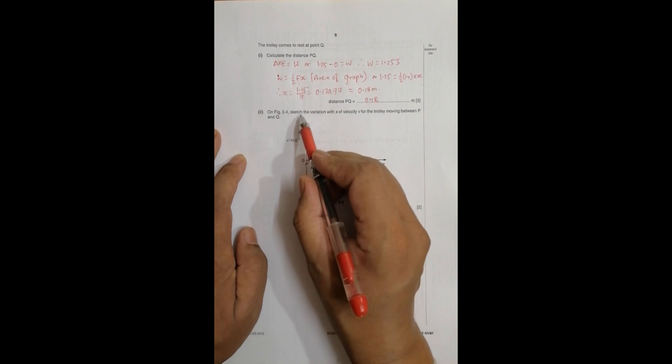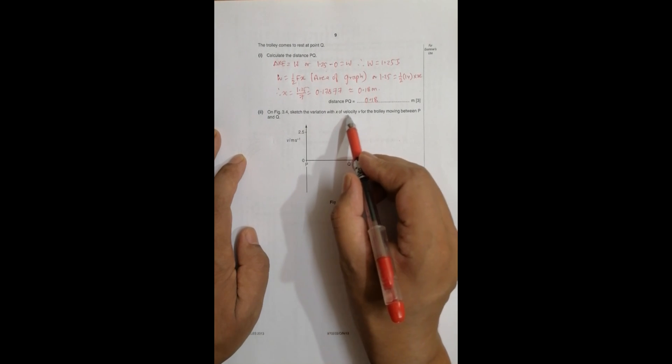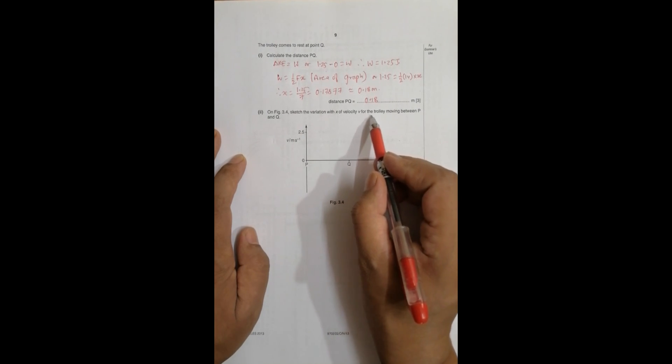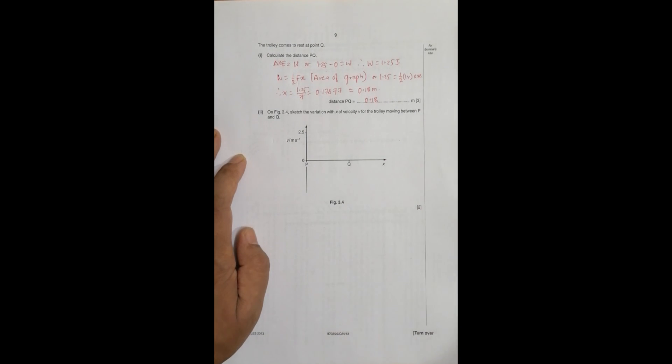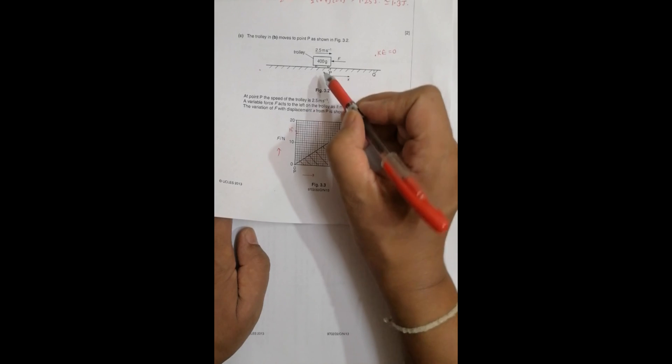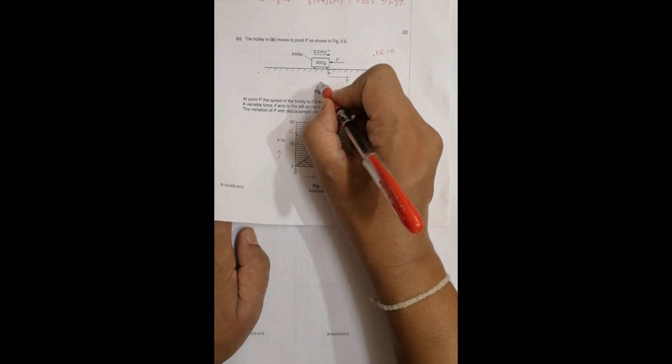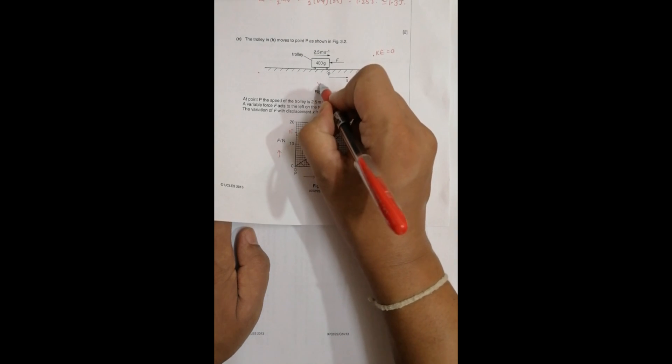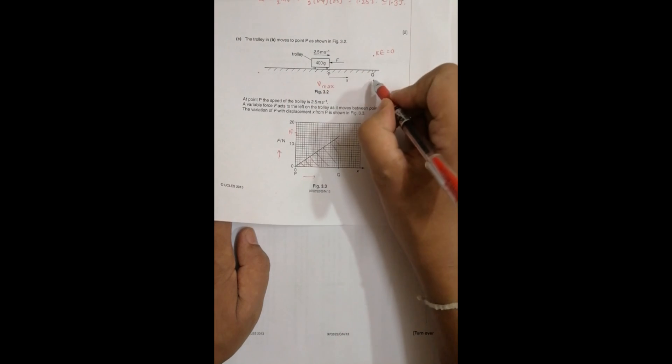On figure 3.4, sketch the variation with x of the velocity v for the trolley moving between P and Q. So we have to draw a graph for the variation of velocity. Here v is max and here v is equal to 0. The initial value of v should be max, which is 2.5 meters per second, and later it has to turn to 0.